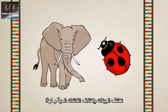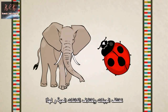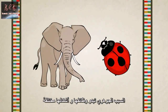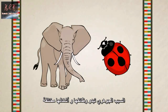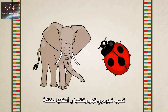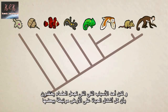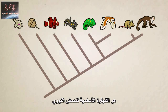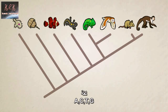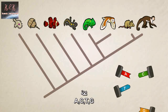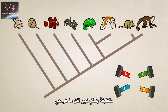Different creatures have different genes, which is ultimately why their bodies look and function differently. But one of the many reasons scientists believe all life on Earth is related is that the basic DNA code — the language of A's, C's, T's, and G's — is pretty much the same for all living things.